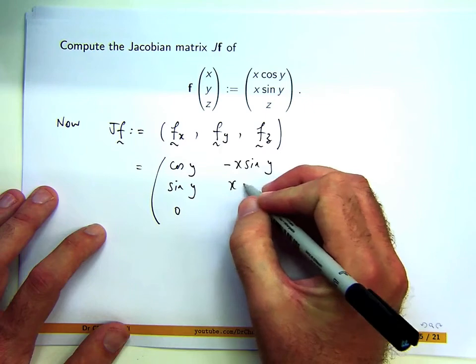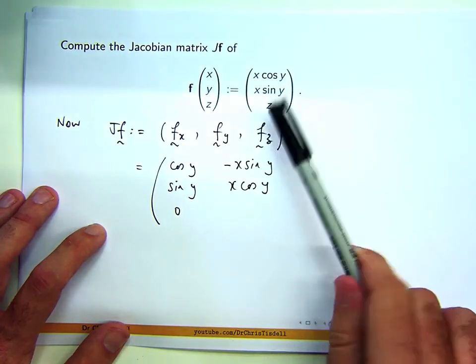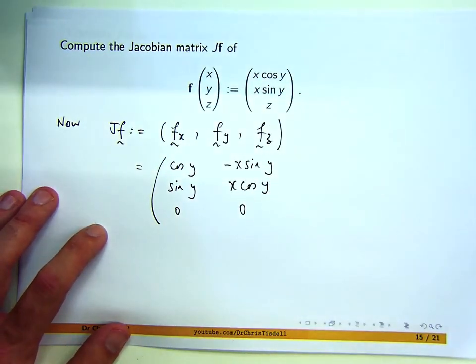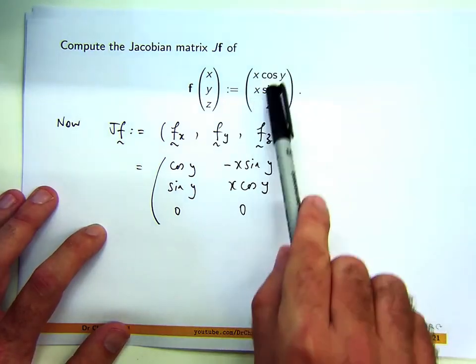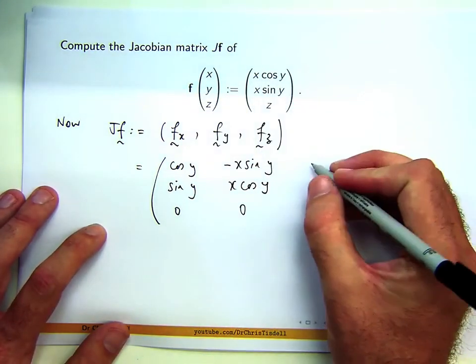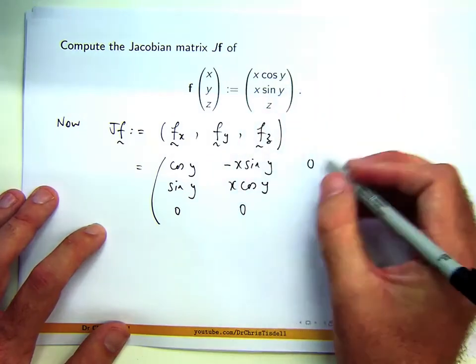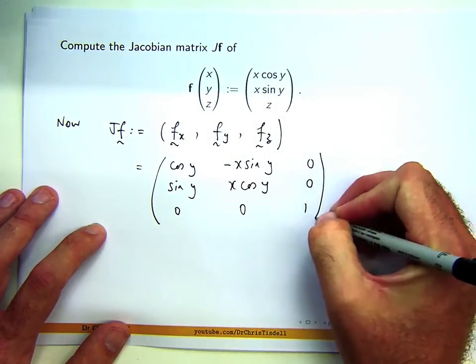The last column is to differentiate each of the components with respect to z and write them as a column. You're going to get zero from that, zero from that, and one from that.